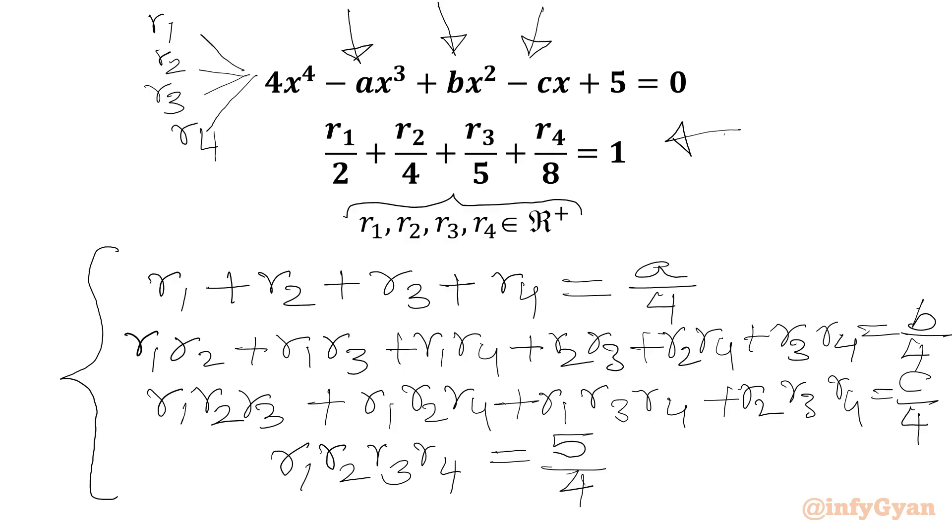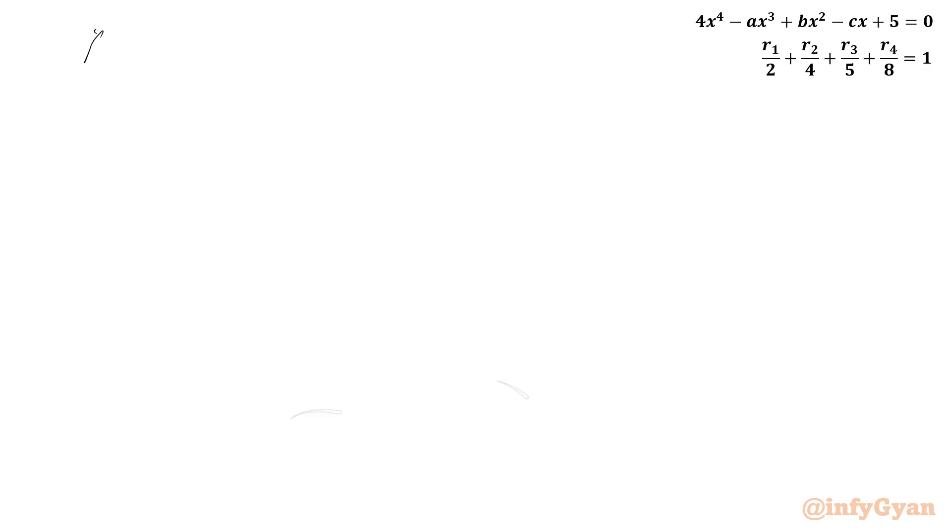I will use here AM-GM inequality. So I will calculate AM first and we can consider R1 over 2, R2 over 4, R3 over 5, R4 over 8 as 4 numbers which are positive and real.